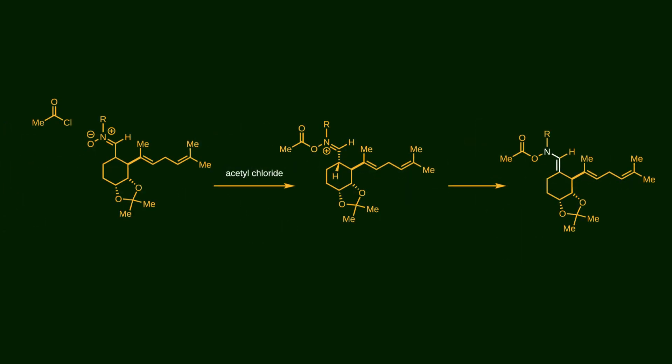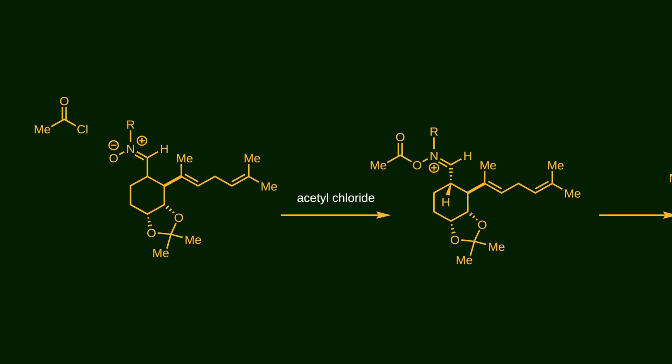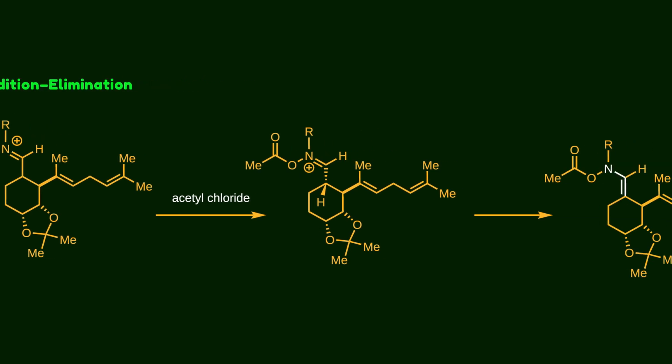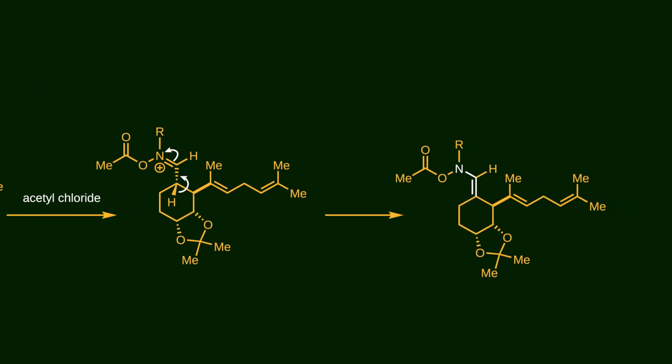In the next step, acetyl chloride adds to this intermediate. The negatively charged oxygen is a strong nucleophile, so it attacks the carbonyl group. As a result, chloride is kicked off by an addition elimination mechanism. Now the iminium ion is unstable, so the pi electrons of the carbon-nitrogen bond move to the nitrogen to neutralize it. This reaction occurs with the help of adjacent sigma electrons of the carbon-hydrogen bond. This ends up producing an amine intermediate.